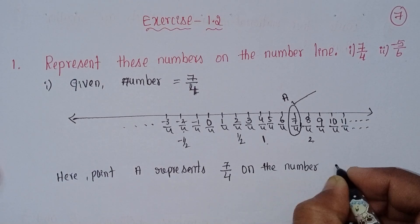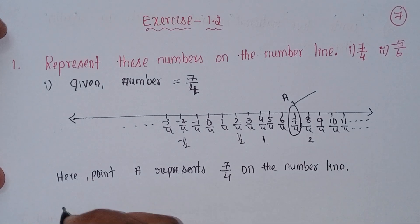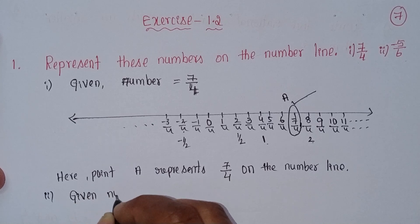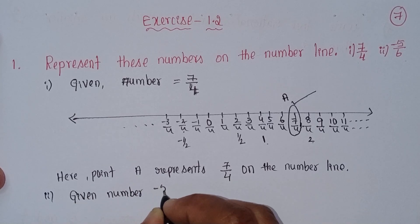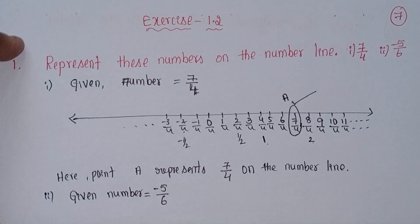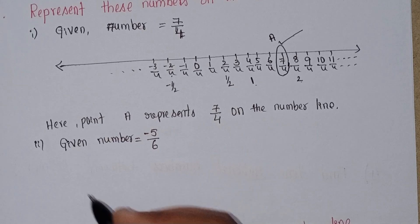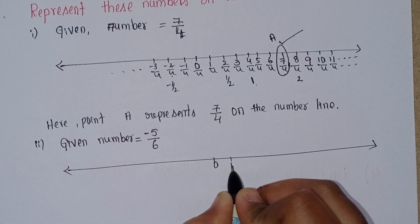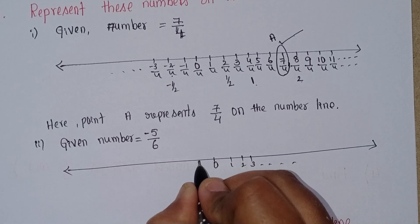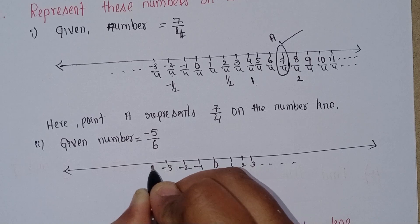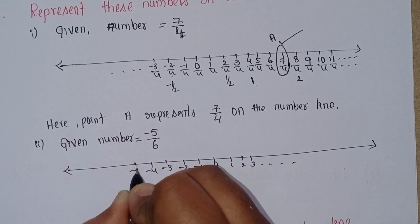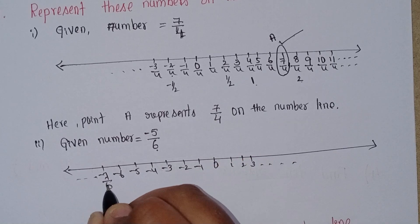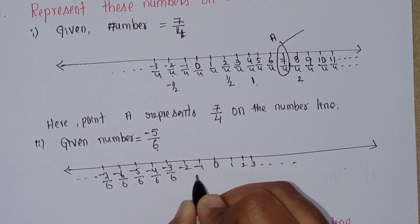Second problem: the given number is minus 5 by 6. Same process, but in the negative side. Number line: 0, minus 1, minus 2, minus 3, minus 4, minus 5, minus 6, minus 7, and so on. The denominator is 6, so divide each unit into 6 equal parts.